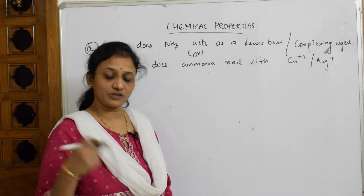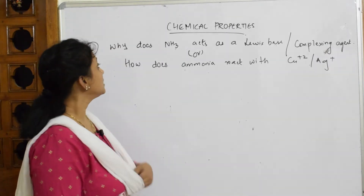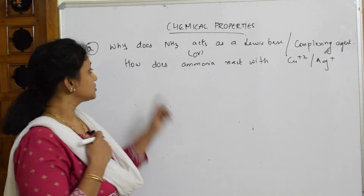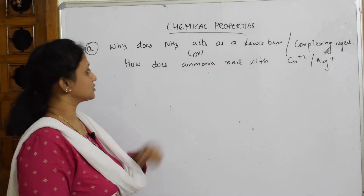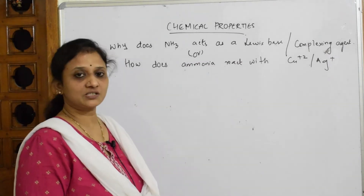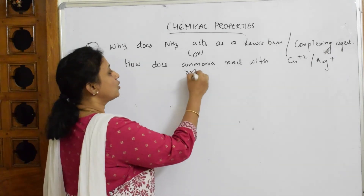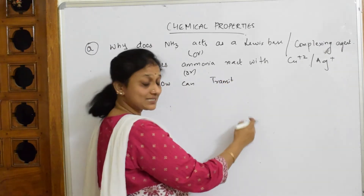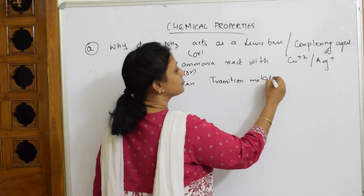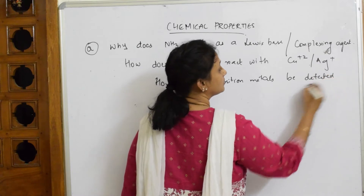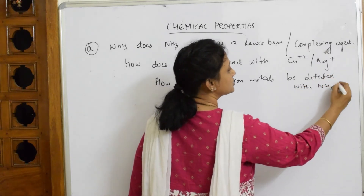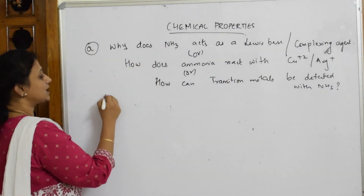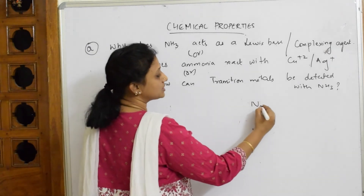Let's look at a very important question: why does ammonia act as a Lewis base or a complexing agent? This is a commonly asked question. It can also be asked as: how does ammonia react with Cu²⁺ or Ag⁺, or how can transition metals be detected with ammonia? All are the same — the answers are the same. Let's write it out.